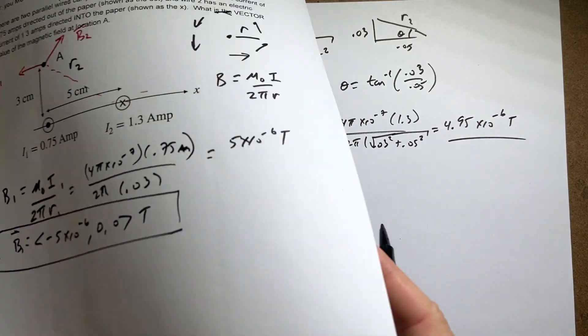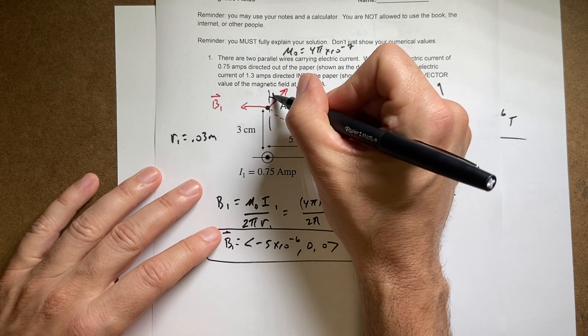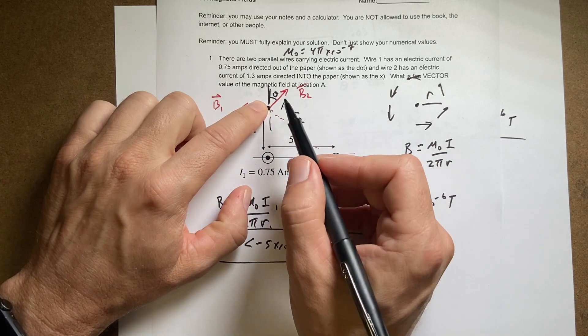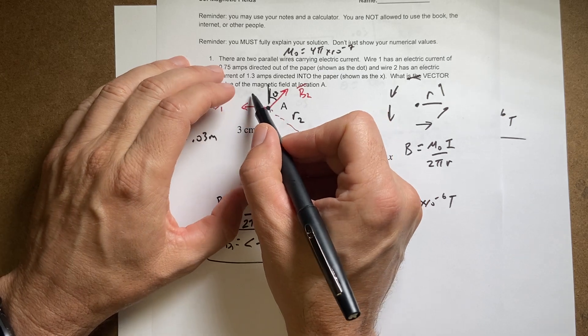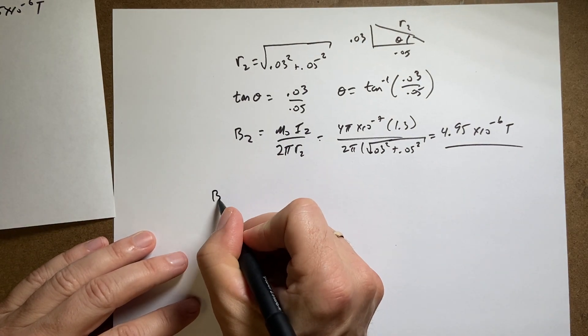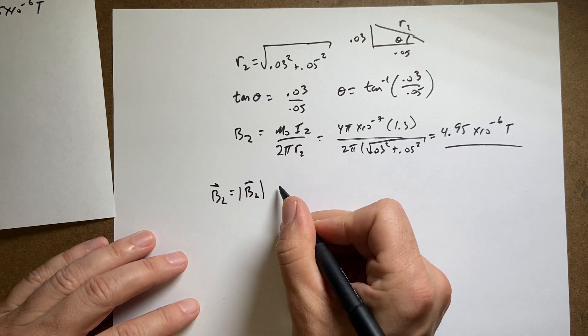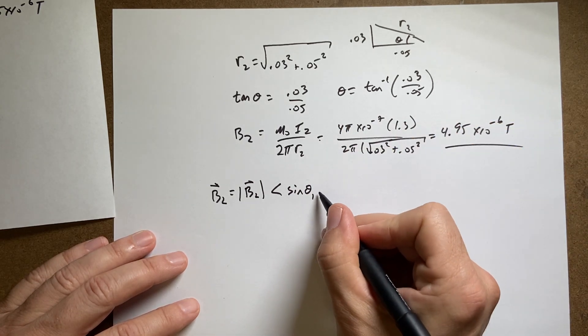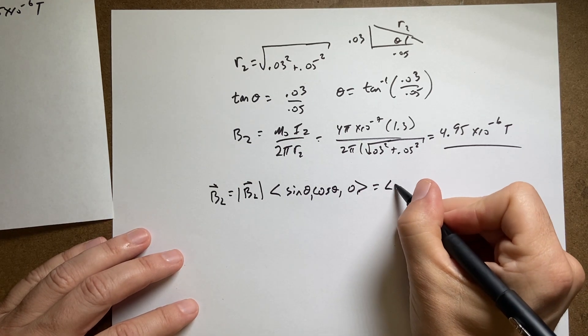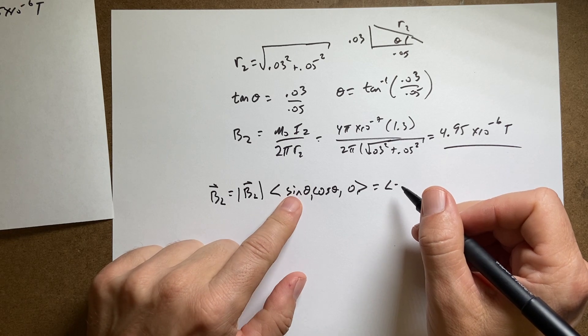Now I need to make it a vector. If this angle is θ, I need how much of that magnitude is in the y direction - that's the adjacent side, so it's cosine θ. The x component is going to be sine θ. So B₂ equals the magnitude of B₂ times the vector (sin θ, cos θ, 0). Remember, we got this because of our picture - don't just say cosine is x, that's not always true.